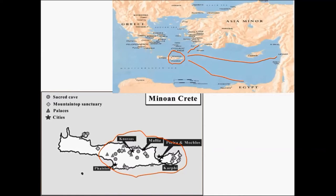With the Minoans taking to the sea early on and becoming maritime traders, they would have been exposed to the idea and reality of palaces. The speculation is that they brought these ideas back to Crete and began to organize their society with palaces as the locus of political, economic, and religious life. Keying in on the palace location icons on the map, you can see that most palaces are concentrated facing Egypt, the Levant, and Asia Minor — while Greece is lagging behind in its developmental phase.